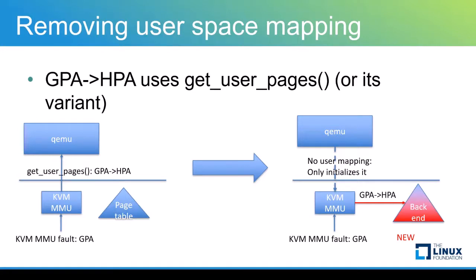The current implementation assumes that the guest memory region is mapped into user space, mostly in our case QEMU. It uses get_user_pages or its variants to convert from guest physical address to host physical address. But for a memory-protected guest, actual guest memory is not necessarily mappable to user space. So KVM MMU needs to be enhanced to not use user space mapping. Kernel direct mapping is also an issue, but that's another story not covered in this session.